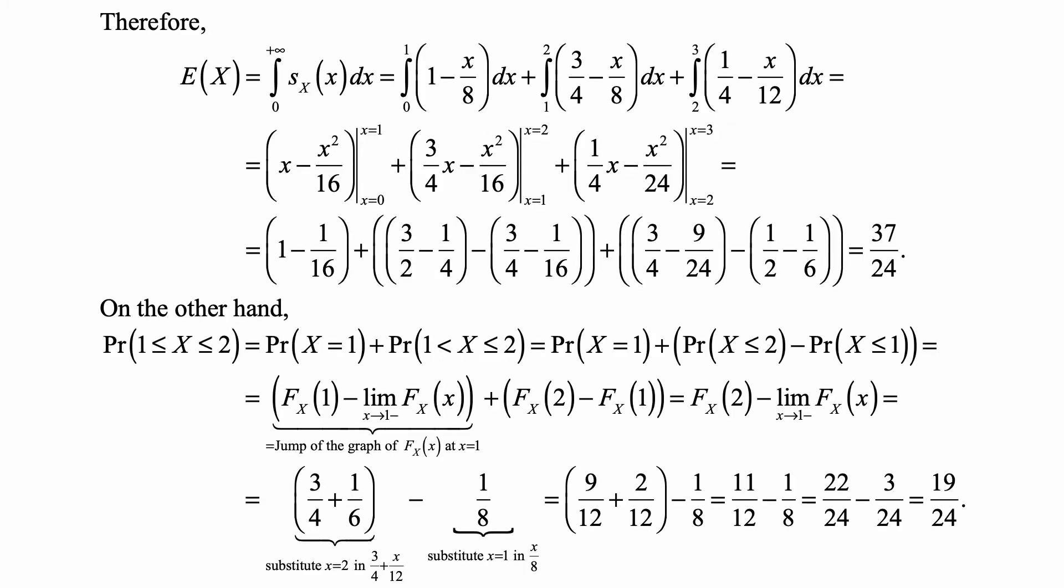Therefore, using the final rule, we get the expected value of X equal to the integral from 0 to plus infinity of the survival function, which equals the integral from 0 to 1 of 1 minus x over 8 dx plus the integral from 1 to 2 of 3/4 minus x over 8 dx plus the integral from 2 to 3 of 1/4 minus x over 12 dx.